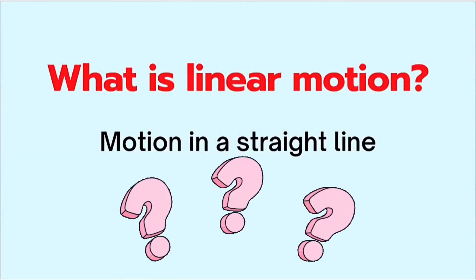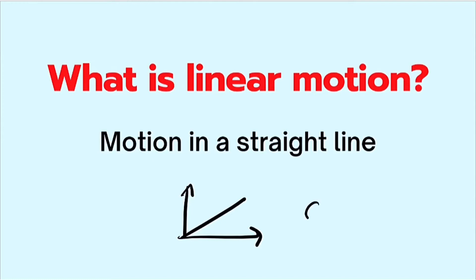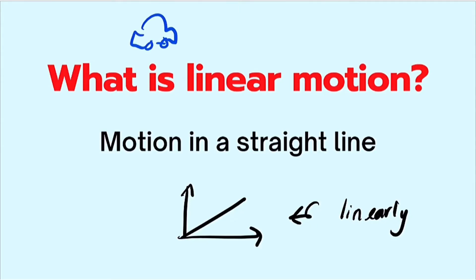First off, what is linear motion? Linear motion can be defined as a motion in a straight line. When you look at a graph that has a straight line shape, it would be described as increasing linearly. The concept of linear motion applies to any sort of object that is moving in a straight line, whether it be a car moving or a human running.